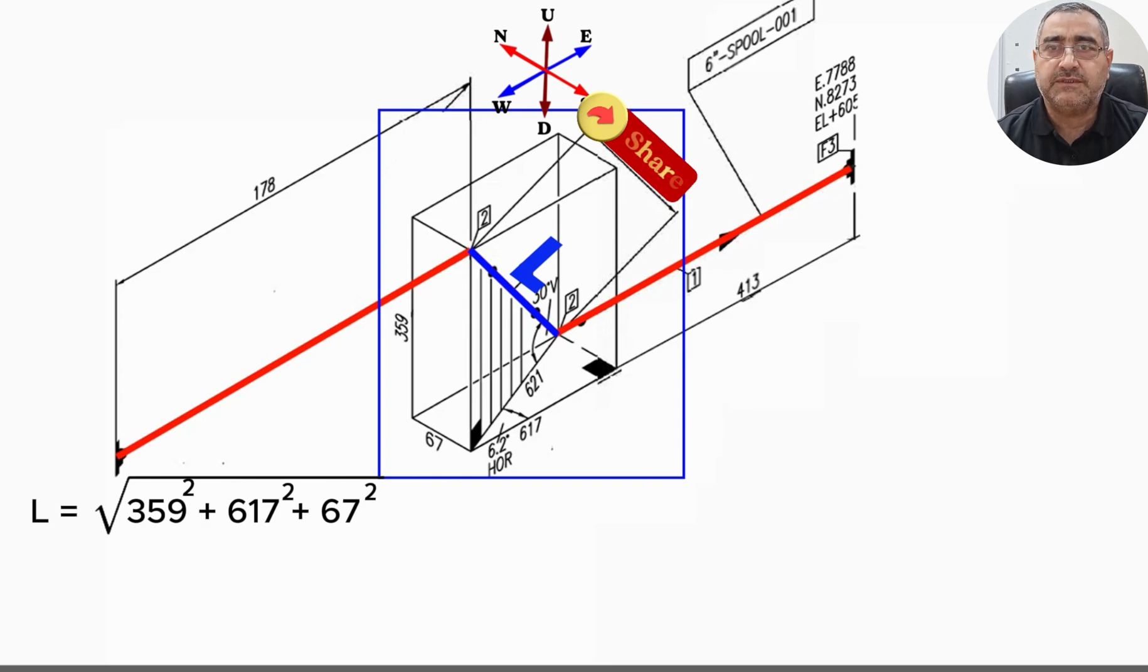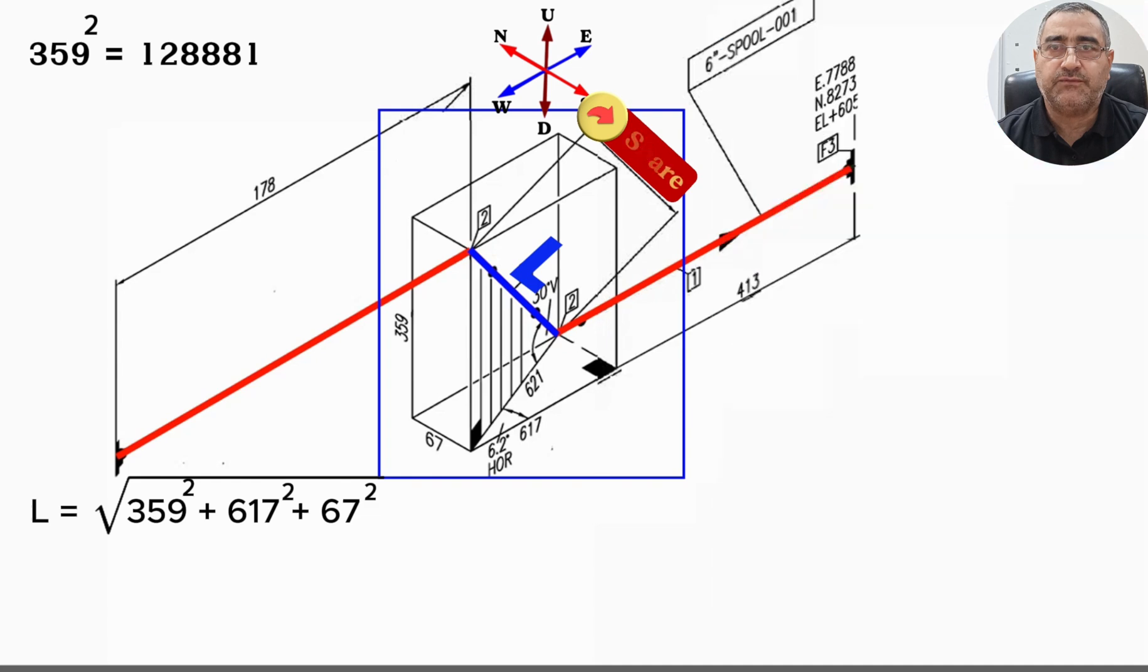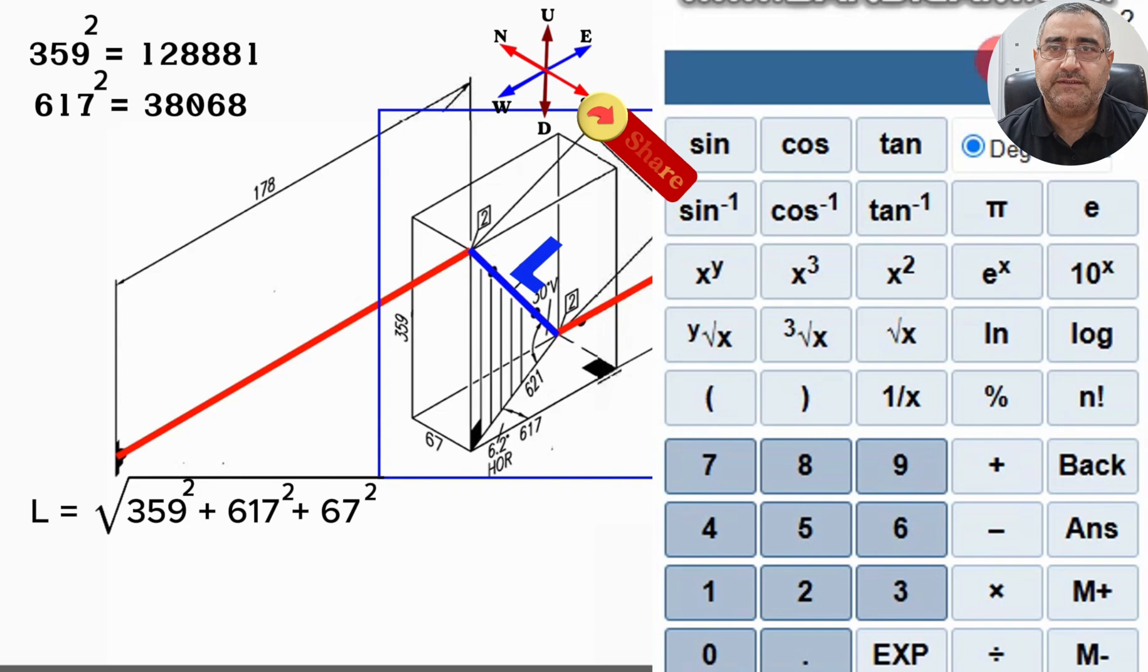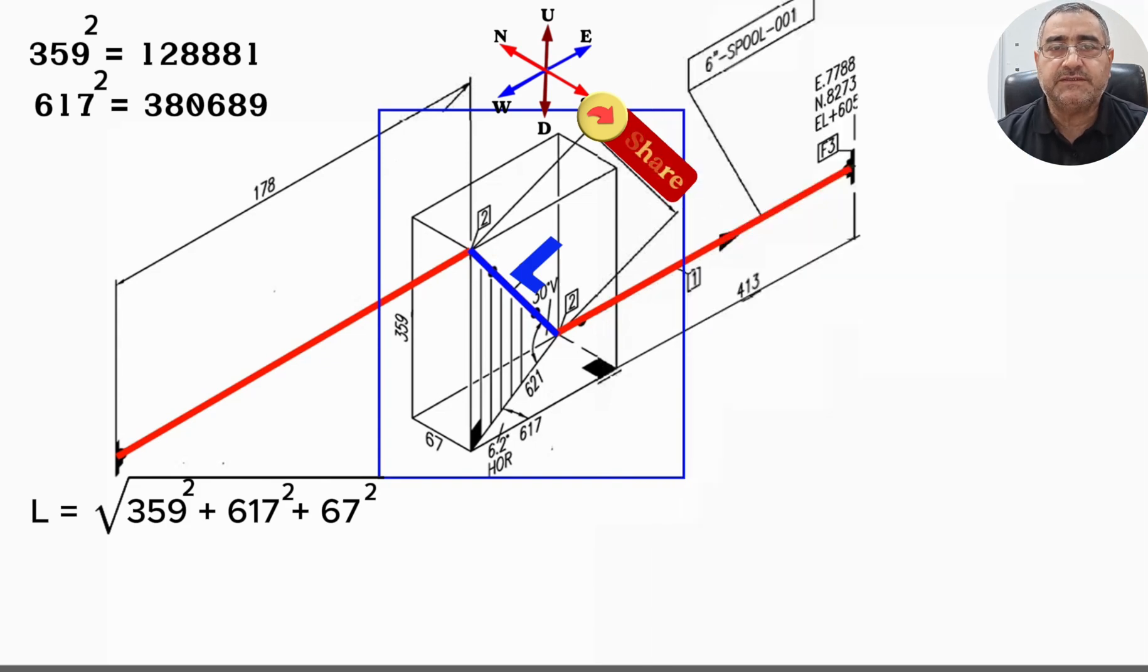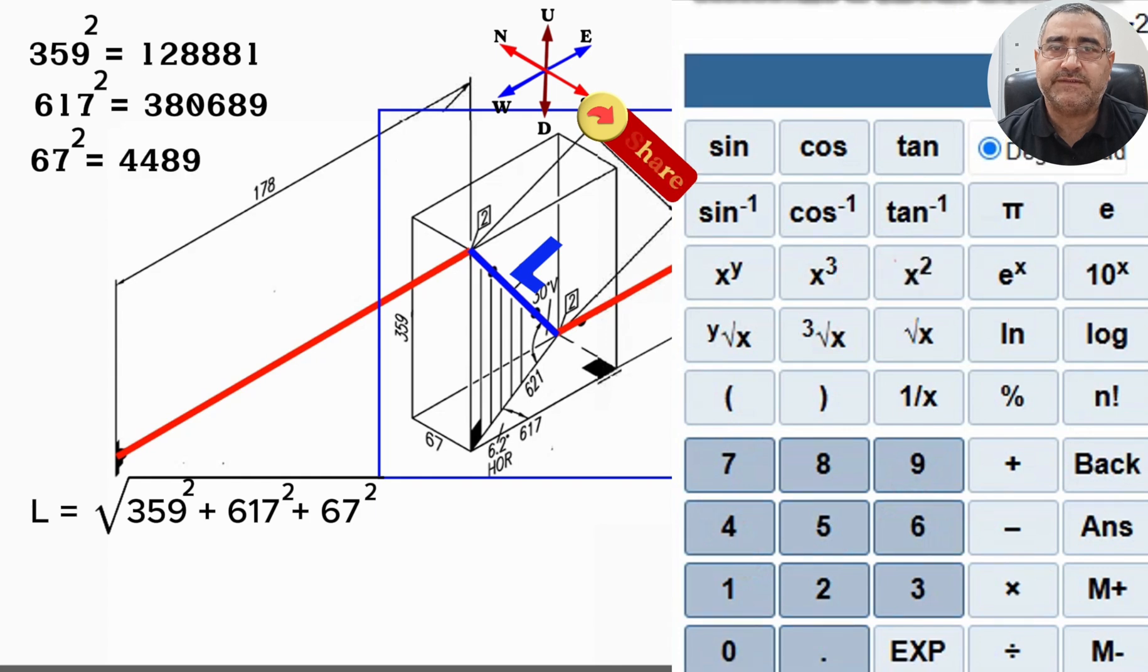359 squared equals 128,881. 617 squared equals 380,689. 67 squared equals 4,489.